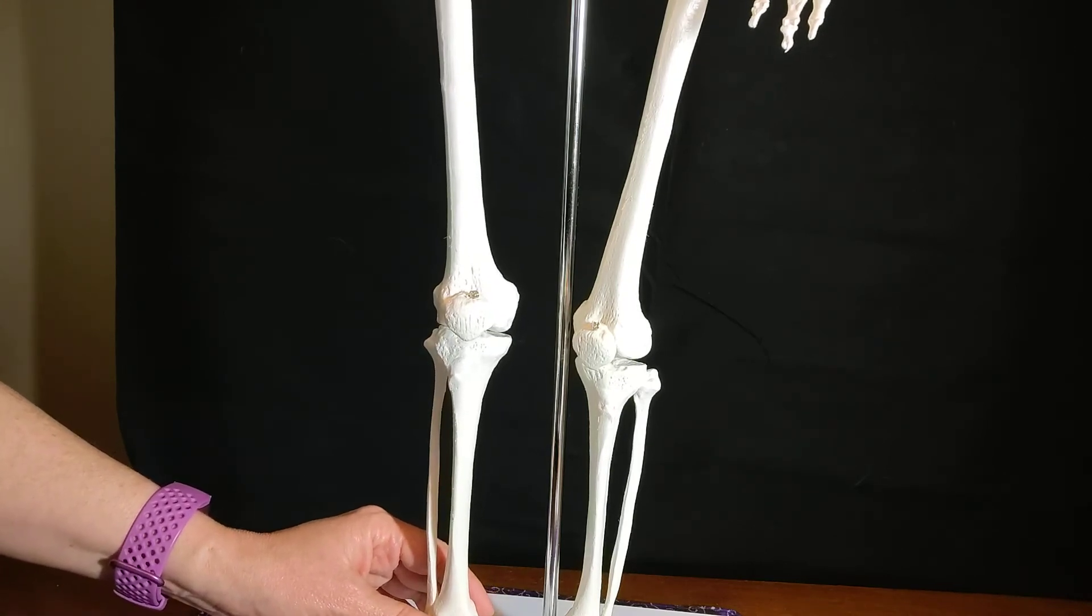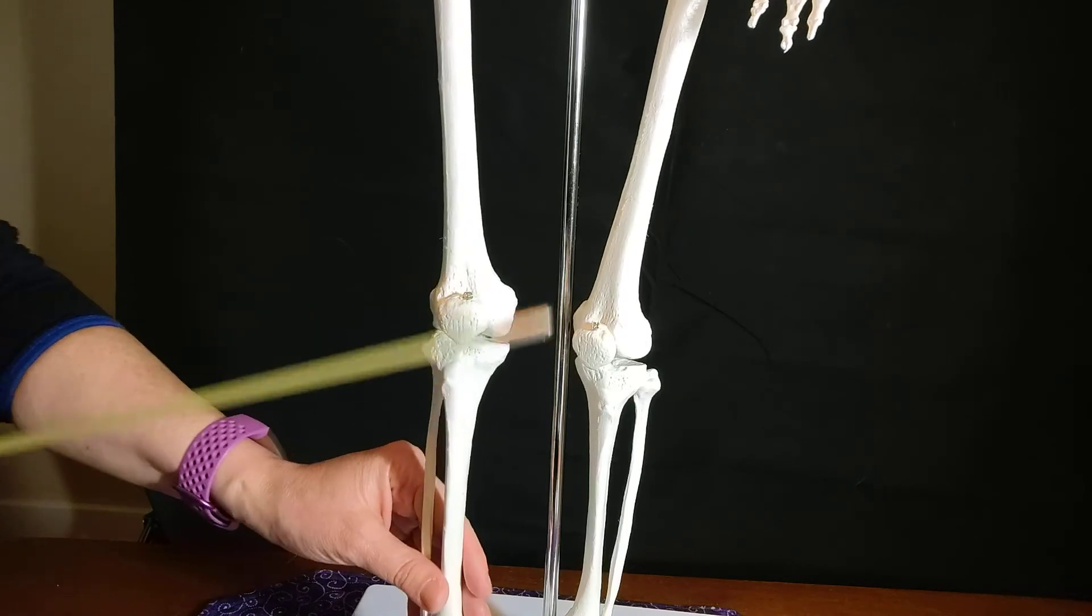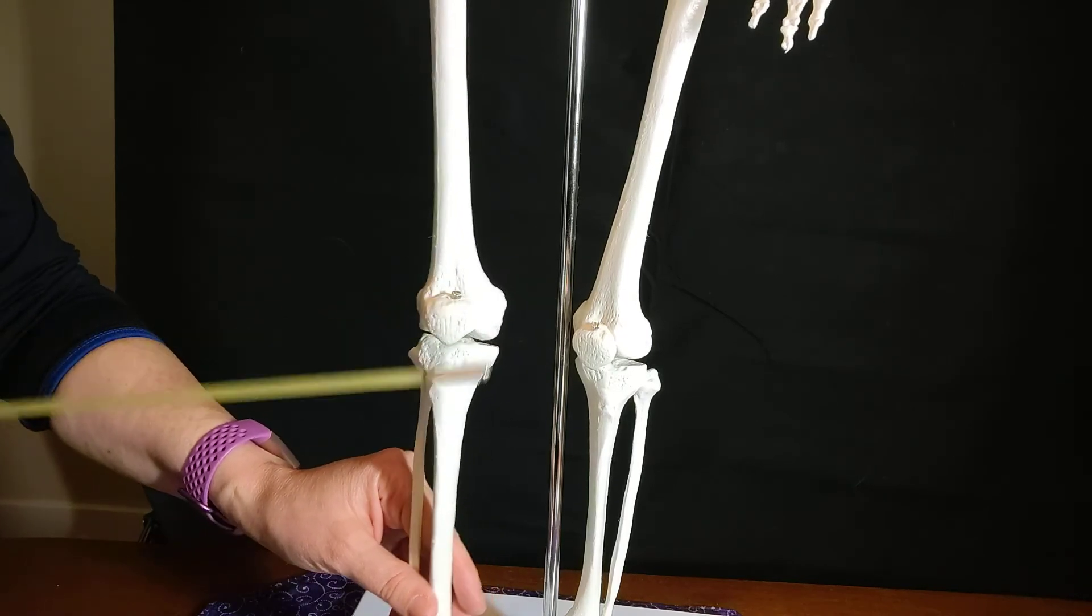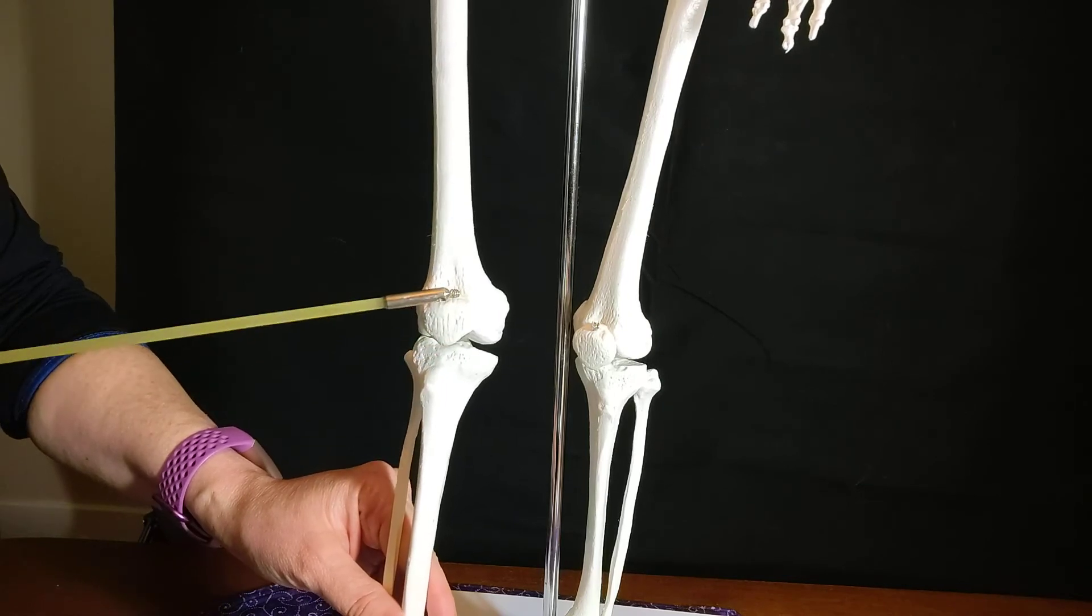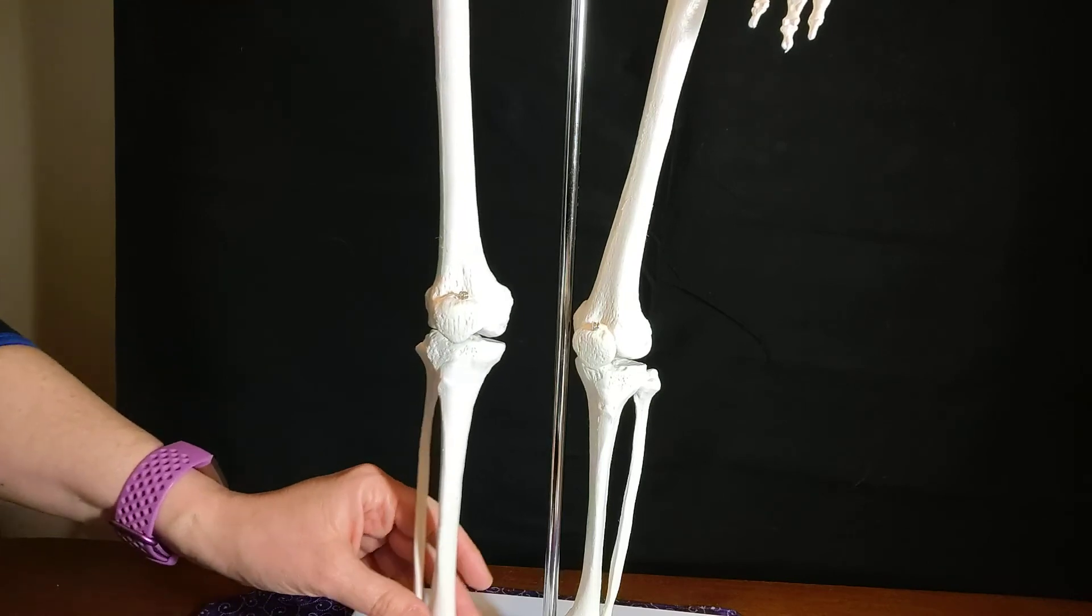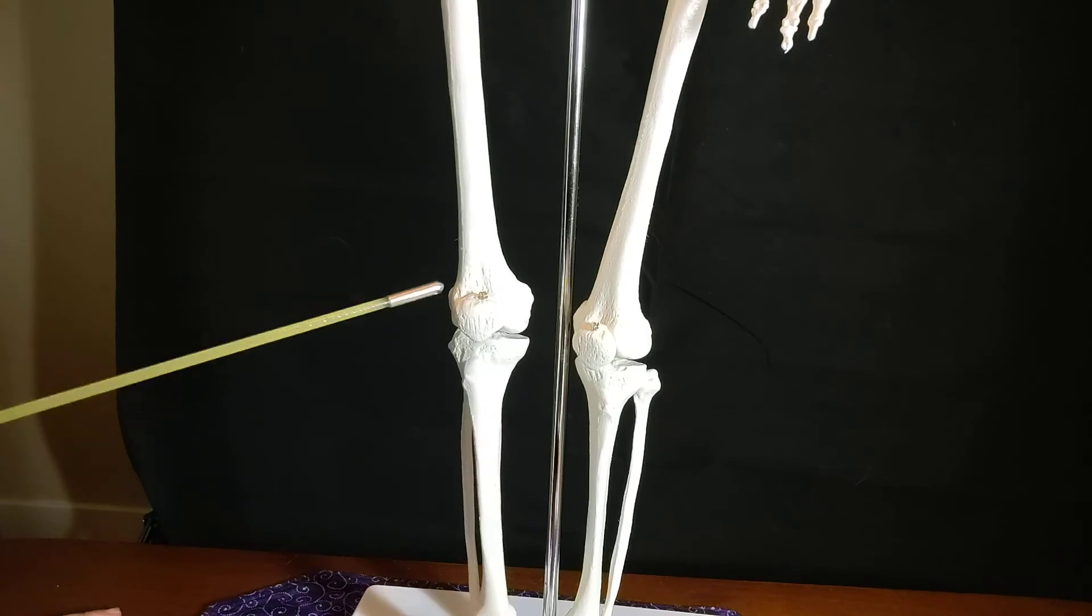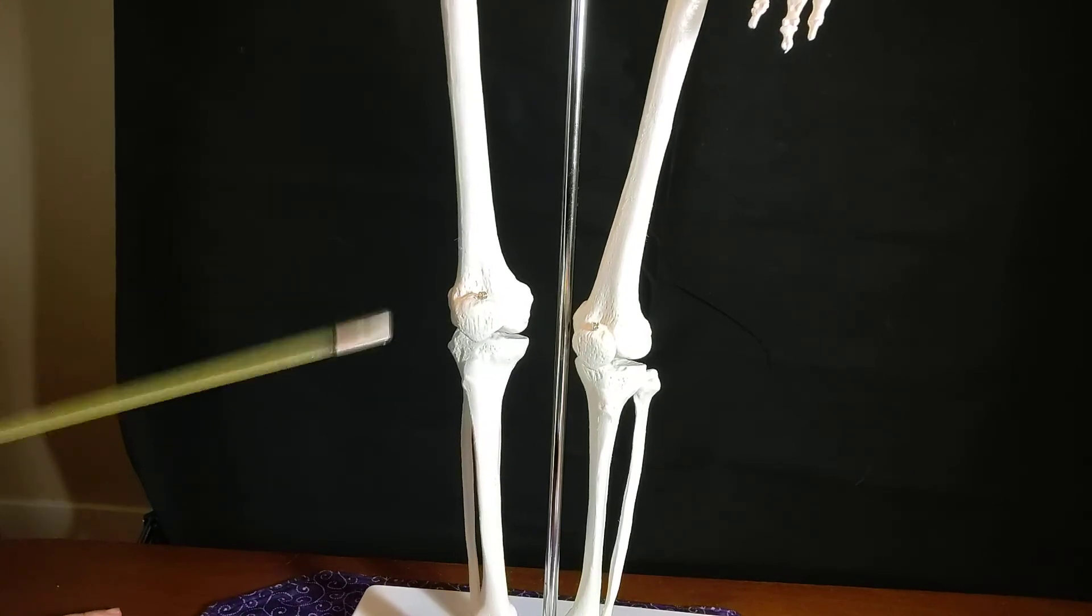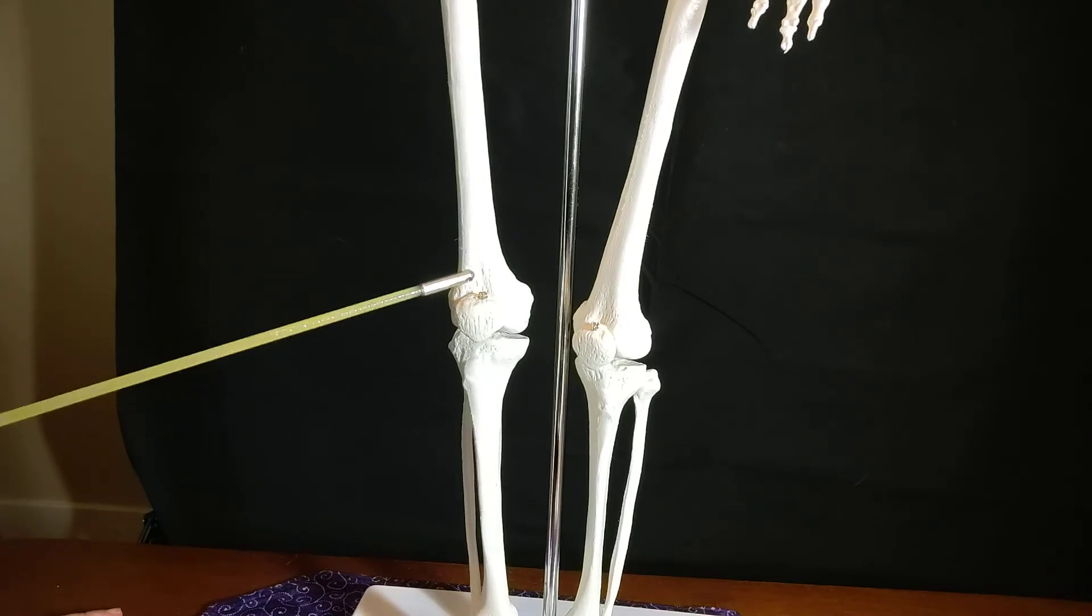So the patella, the base of it is the top flatter part here, and the apex is the point at the bottom. So base of the patella, apex of the patella. All of those on the patella are palpable. The posterior surface of the patella, of course, is not palpable, but it's the part that articulates with the femur forming the patellofemoral joint.